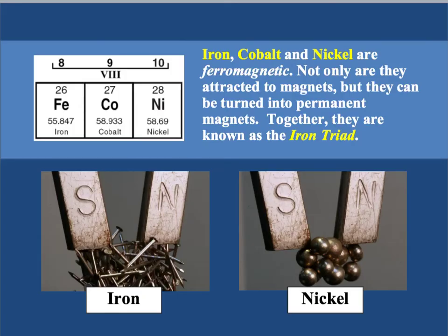There are three special elements on the periodic table: iron, cobalt, and nickel. They are what we call ferromagnetic. Ferromagnetic just means that they are attracted to magnets and they can be turned into magnets as well. These three elements have a special name — they are known as the iron triad. Iron, cobalt, and nickel are ferromagnetic, meaning they are attracted to magnets and can be turned into magnets, and together all three of them are known as the iron triad.